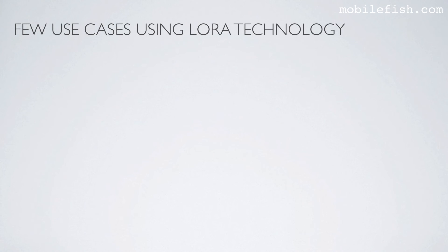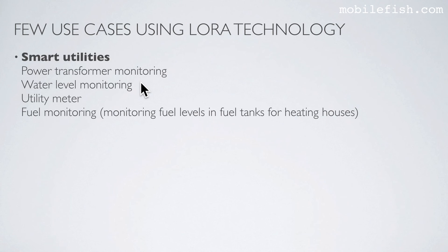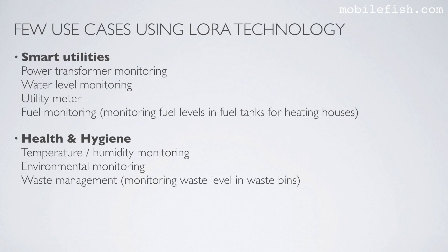Here are a few use cases using LoRa technology. I have created five categories: smart utilities, health and hygiene, safety, efficiency, and agriculture. In the category smart utilities, you can use LoRa technology for power transformer monitoring, water level monitoring, utility meter monitoring, and fuel monitoring — for example, monitoring fuel levels in fuel tanks for heating houses. In the category health and hygiene: temperature and humidity monitoring, environmental monitoring, and waste management.